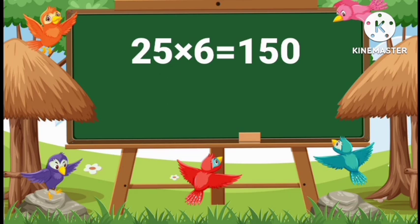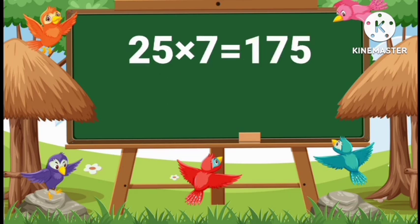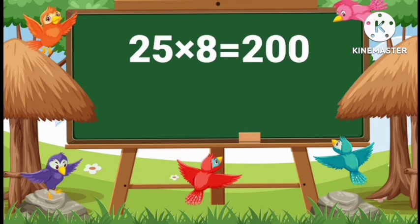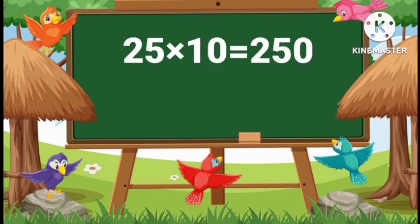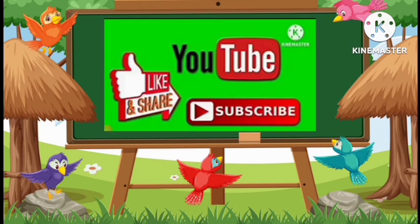25 sixes are 150. 25 sevens are 175. 25 eights are 200. 25 nines are 225. 25 tens are 250.